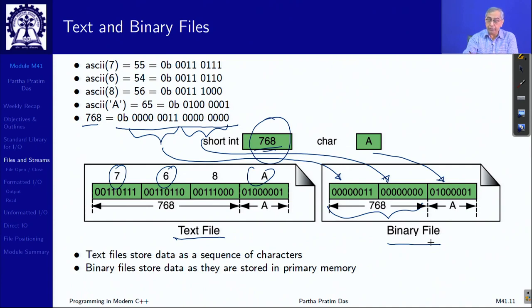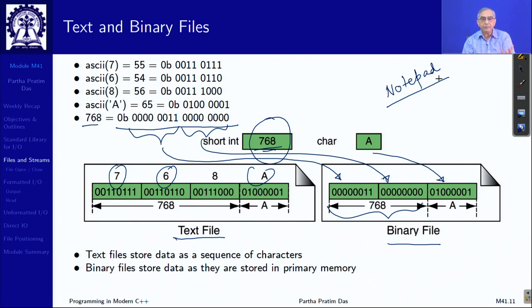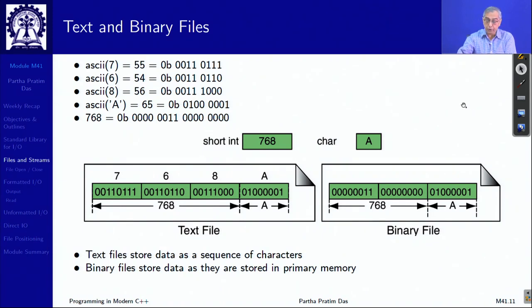To verify this, you can open a .docx file in Notepad on Windows. You will see garbage characters because Notepad is a text editor that groups every 8 bits and represents them as a character — but the Word file's internal representation is not ASCII. If you open a program source file in Notepad, you will see normal readable text. This illustrates why both text and binary file support is necessary.